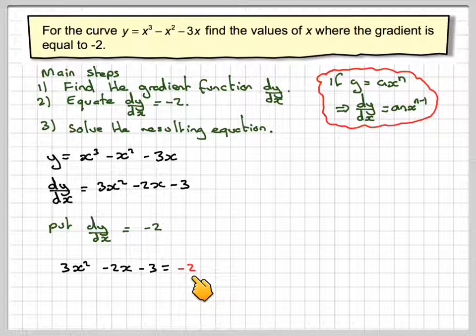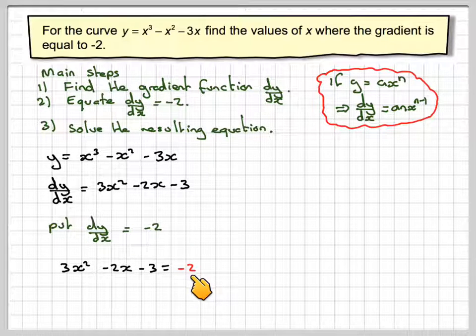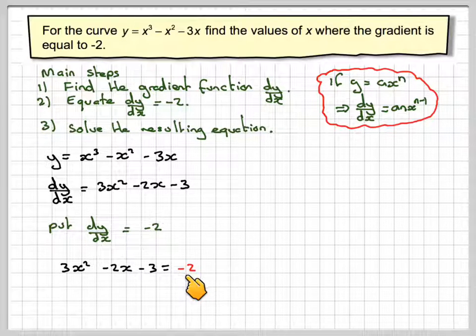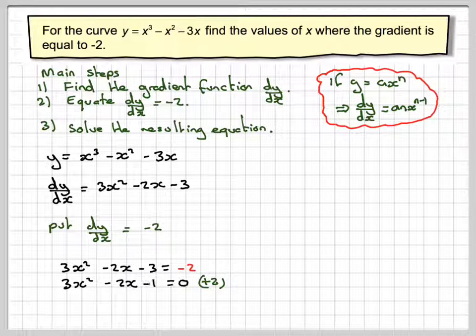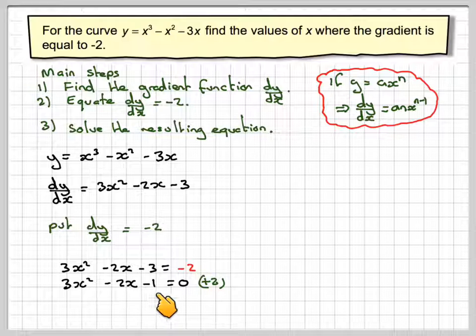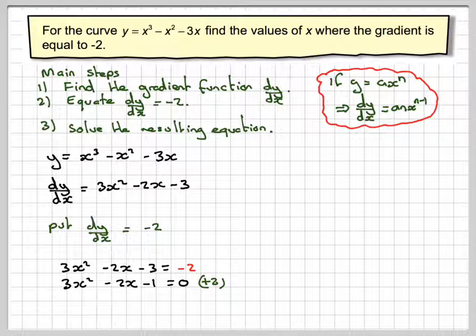This is a quadratic. In order to solve a quadratic, we must put it equal to 0. So add 2 to both sides. If we add 2 to this side we get 0. If we add 2 to this side we get minus 1. So we end up having to solve 3x squared minus 2x minus 1 is equal to 0.